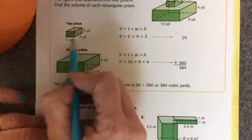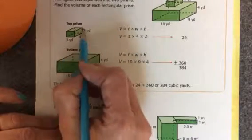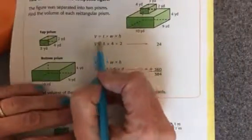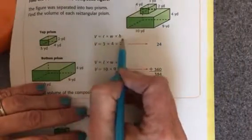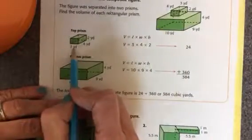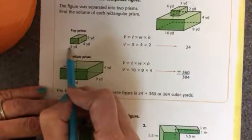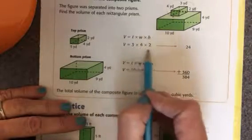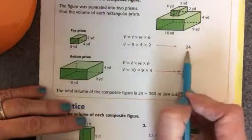Then I'm going to get my three numbers, which are length, width, and height. And then, remembering the formula for volume, I'm going to do length times width times height. So here on my top prism, I have a length of 3 yards, a width of 4 yards, and a height of 2 yards. So I'm going to multiply all three of those numbers and I'll have 24.